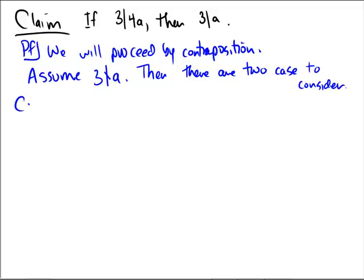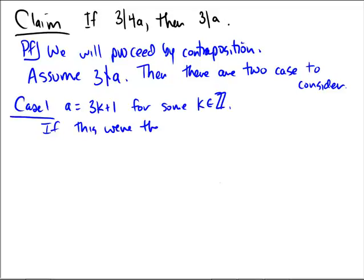What was case 1? Case 1 was that a could possibly be equal to 3k plus 1 for some k integer. But if this were the case, then, what would 4 times a be equal to? Well, as we saw,